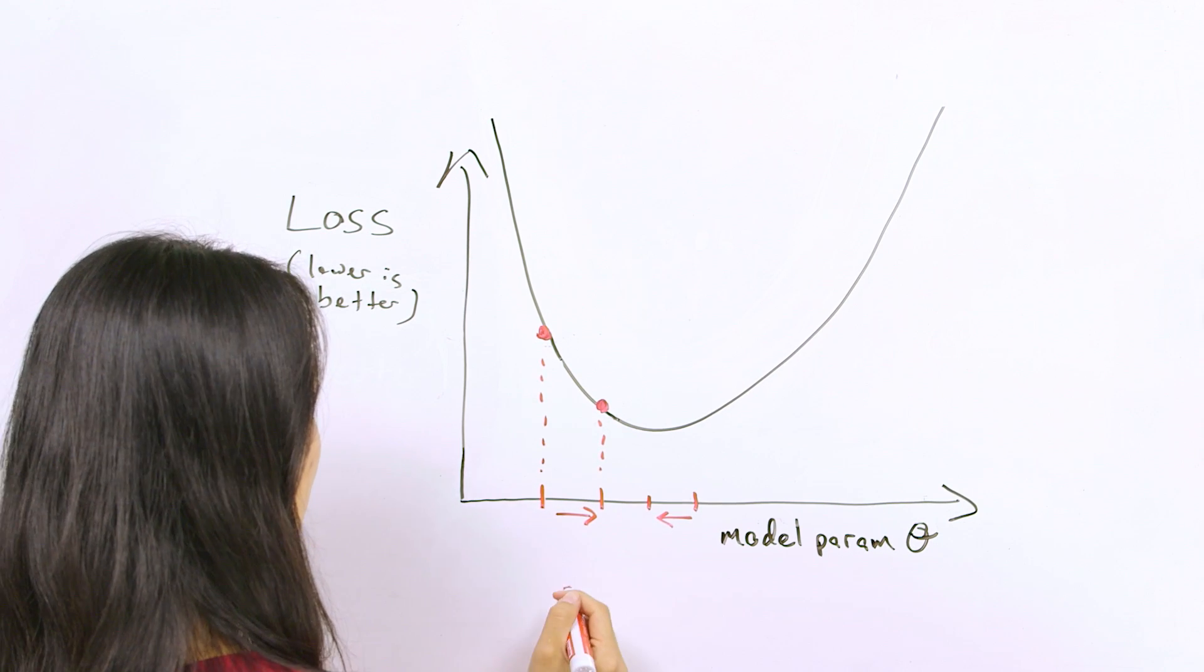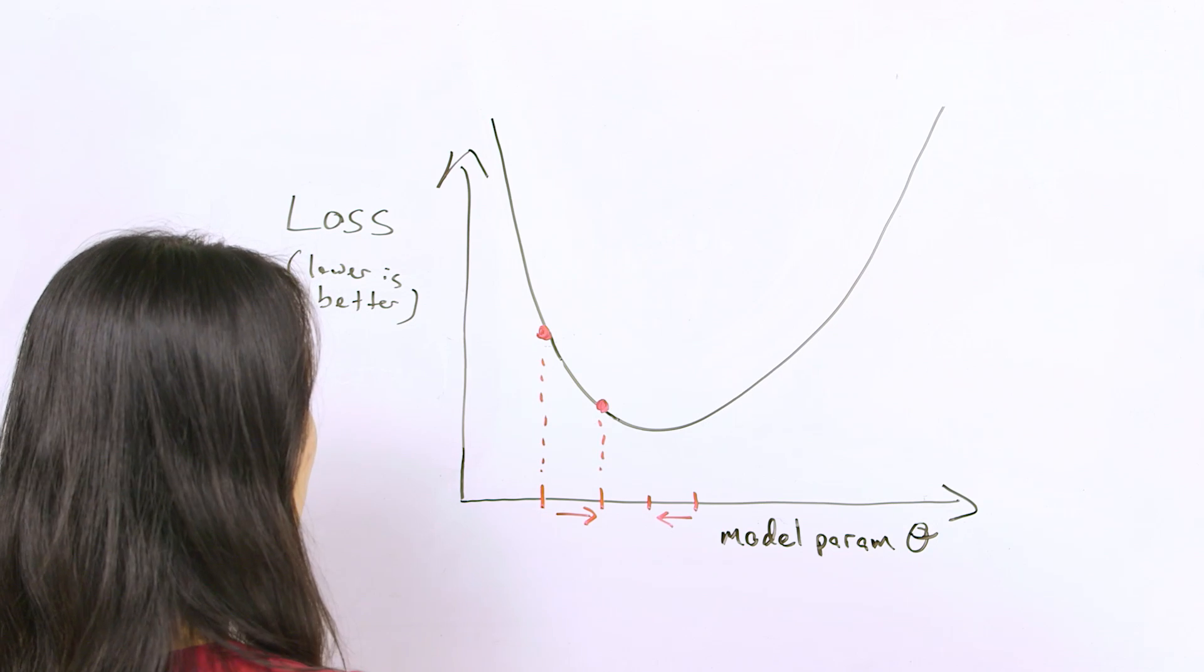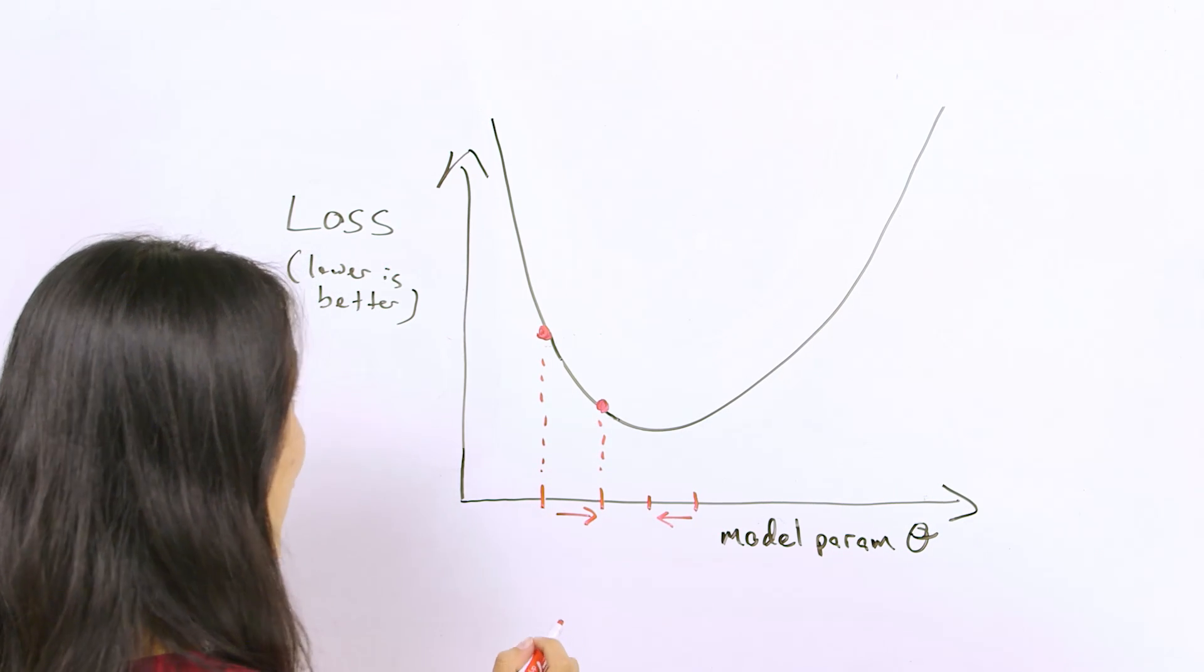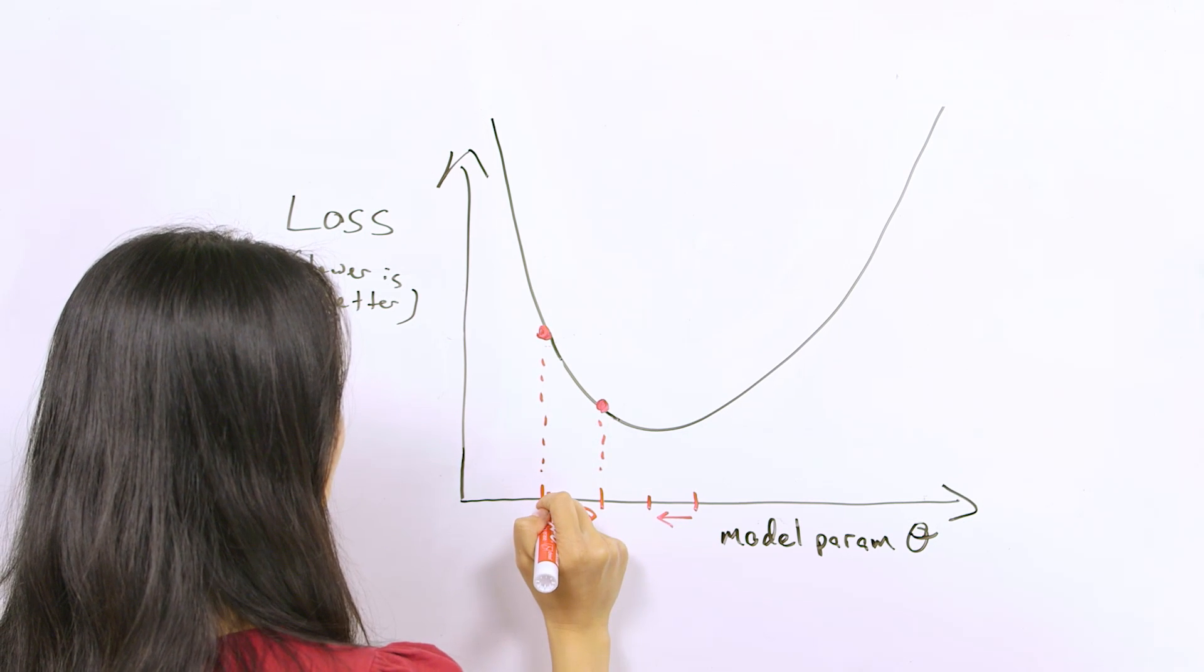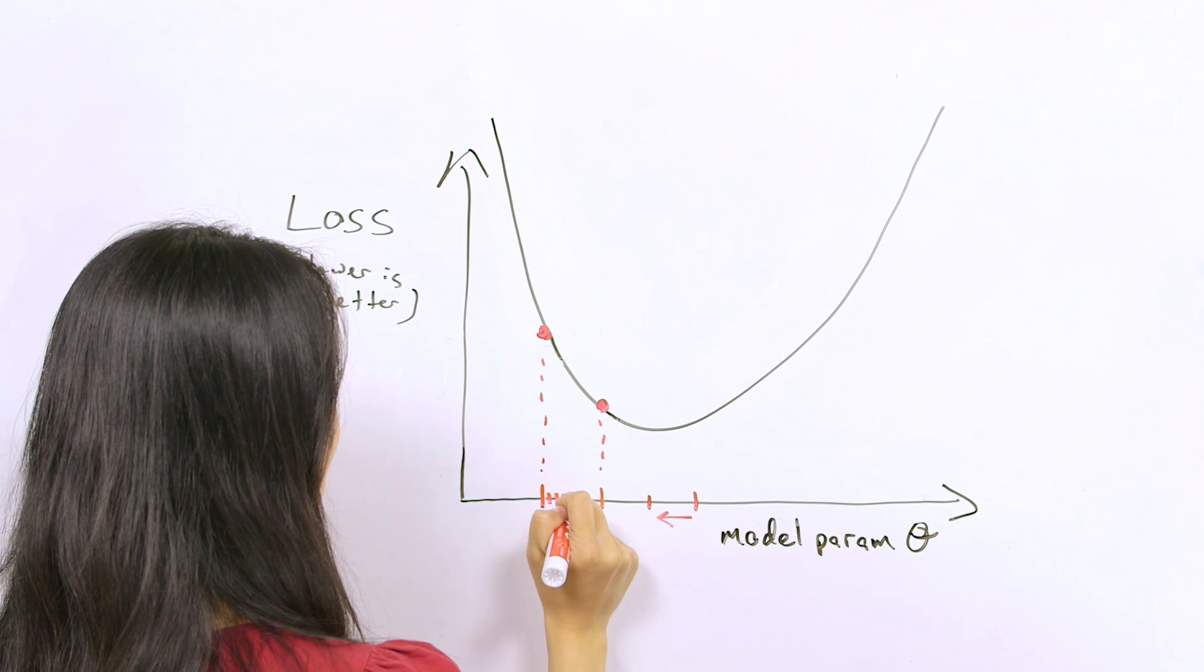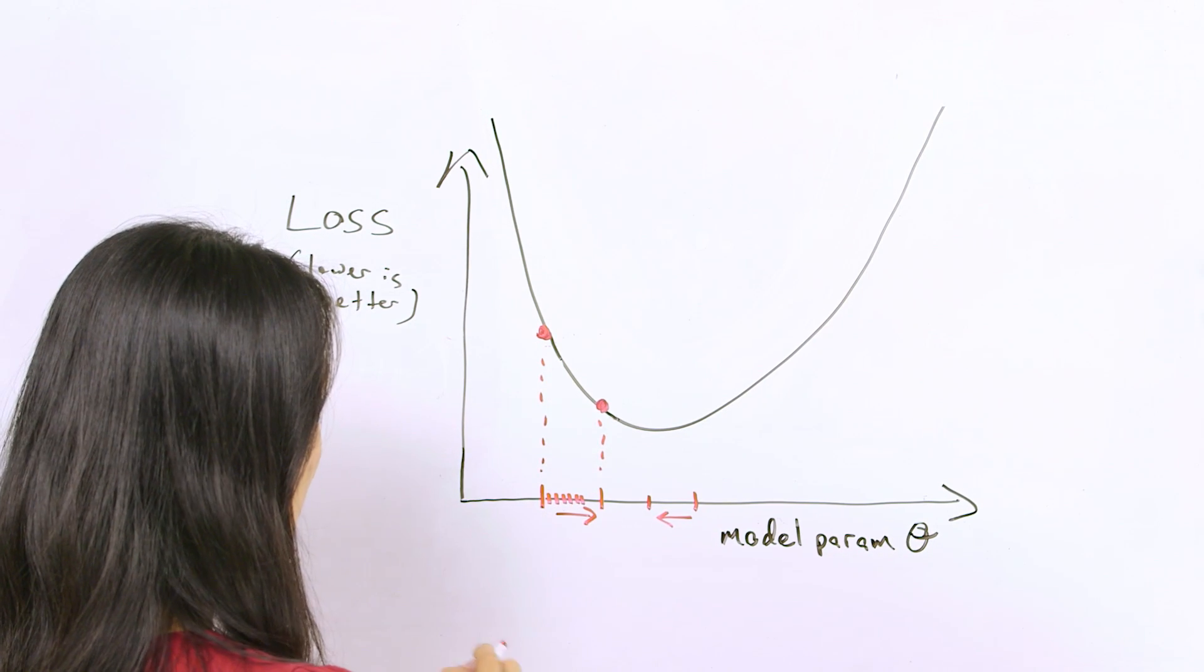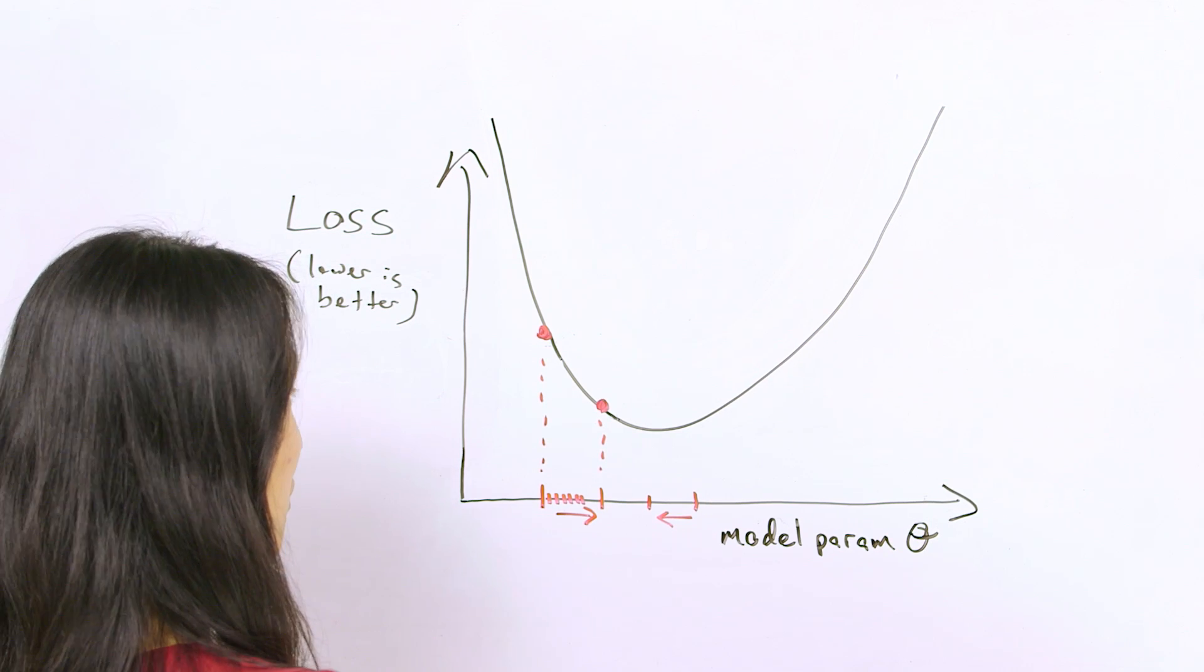How large of a step should we take in the direction of the negative gradient? That is dictated by the learning rate, a hyperparameter that you can twiddle. If the learning rate is really small, then we'll take a bunch of teeny tiny gradient steps requiring a lot of computation in order to reach the minimum.